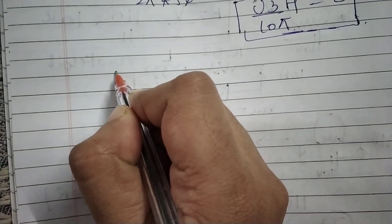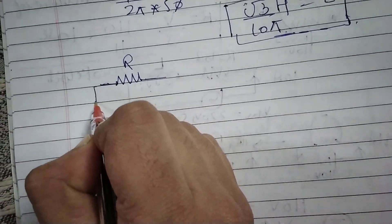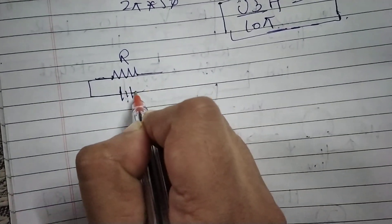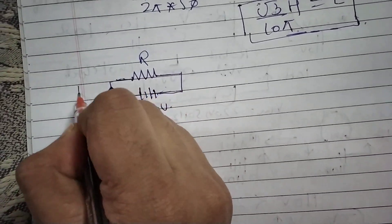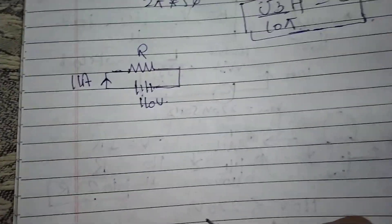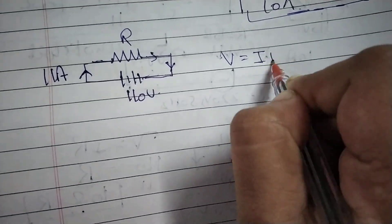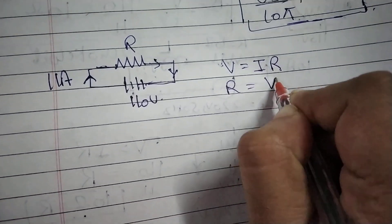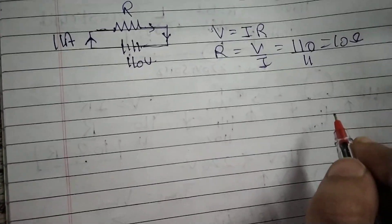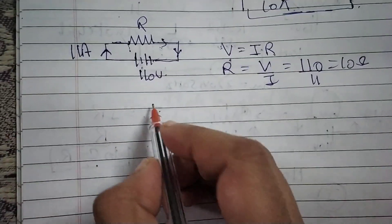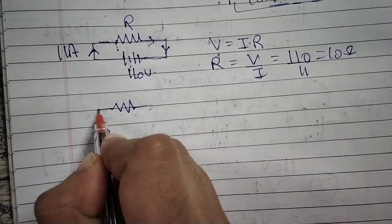First, we have a bulb which has resistance R ohms. A 110 volt battery is applied and 11 ampere current is flowing through it. So first we have to find the resistance from these values. We know V = IR, so R = 110 divided by 11, which is 10 ohms.